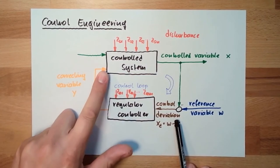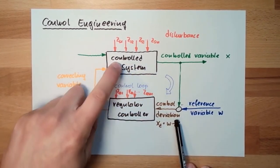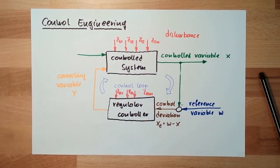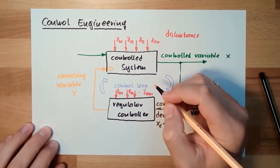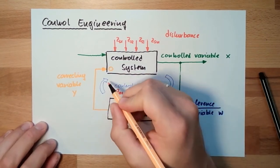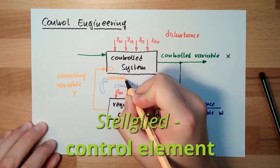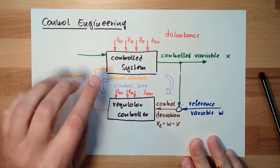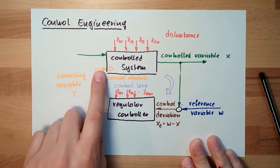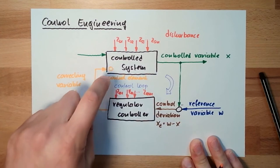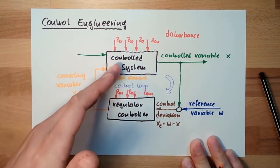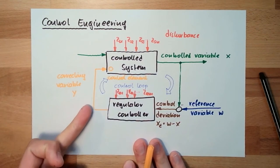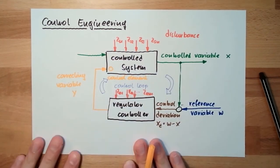The output of the control itself is the correcting variable. The correcting variable needs to influence the control system somehow, and this control system contains a control element. This control element is something which is influenced by the correcting variable, and it in turn influences the controlled variable. It is the device which makes the correcting variable able to control the controlled variable.